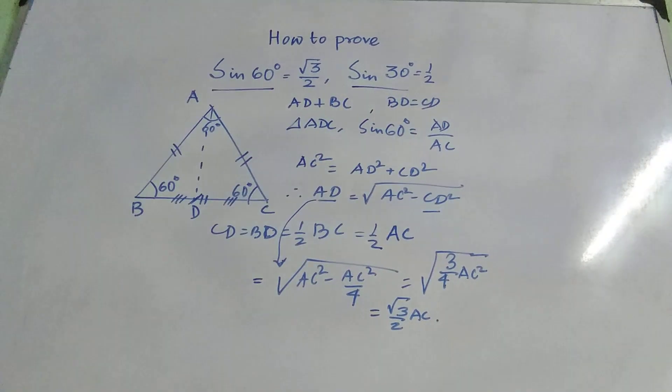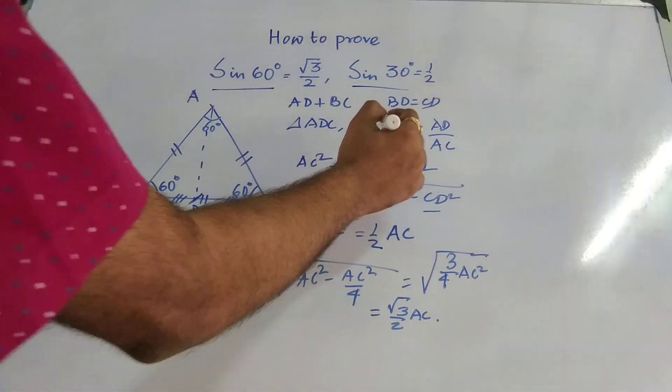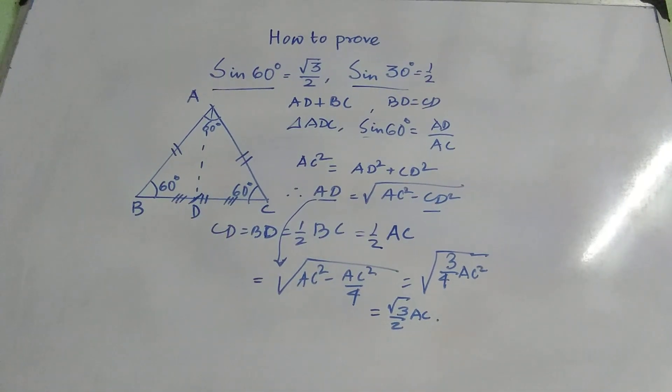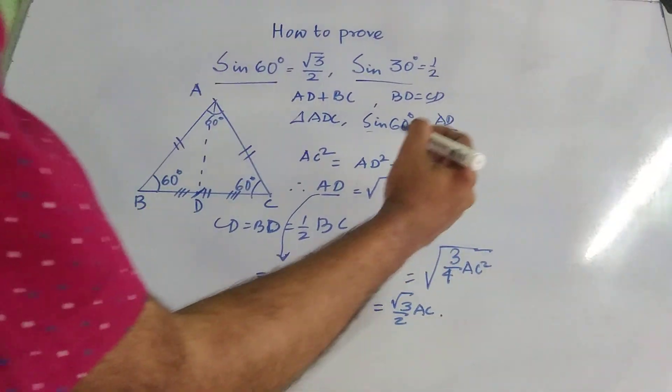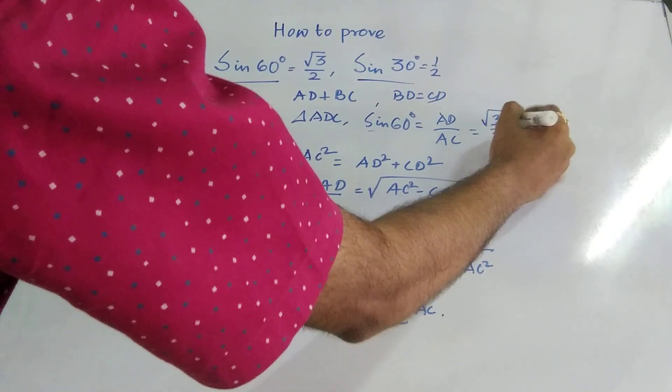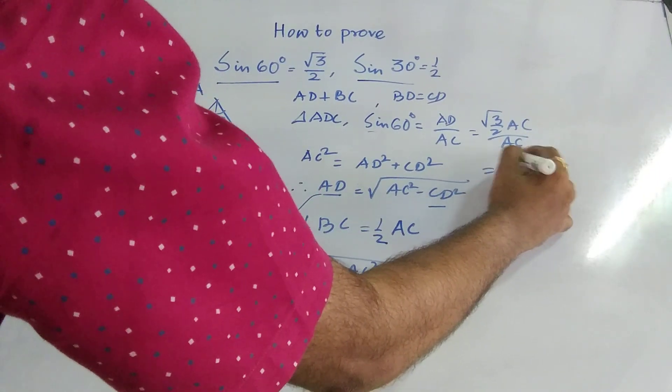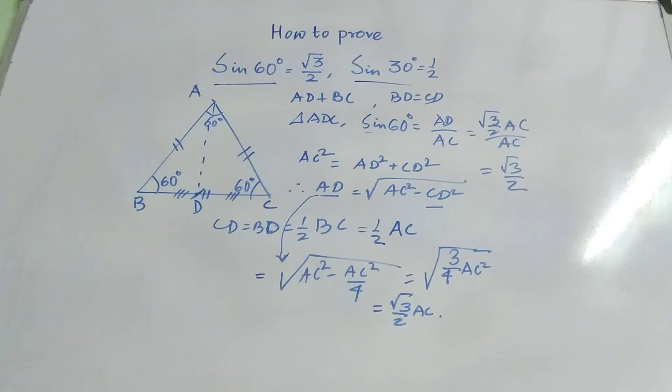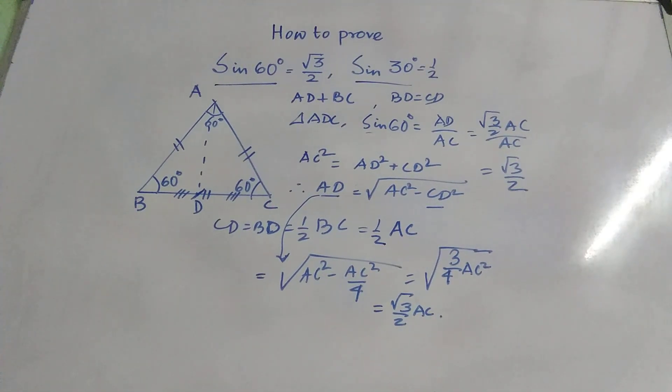So the sin formula, which is getting derived from here is sin 60 equal to AD by AC, which is nothing but root over 3 by 2 into AC divided by AC equal to root over 3 by 2. So this is very simple, how we are deriving the formula sin 60.